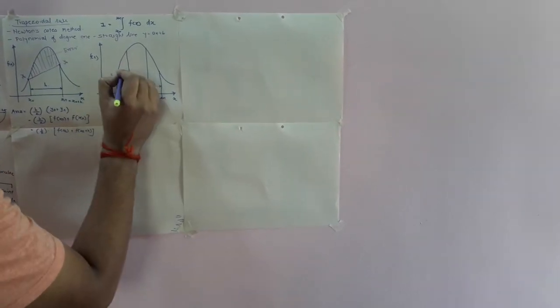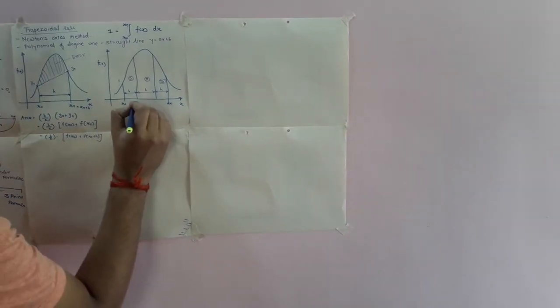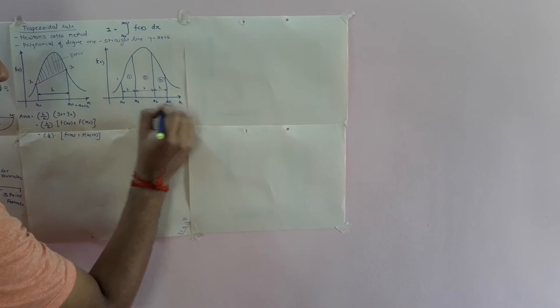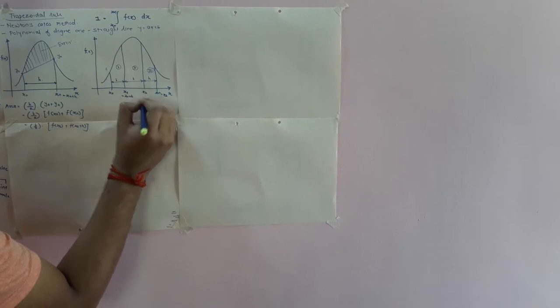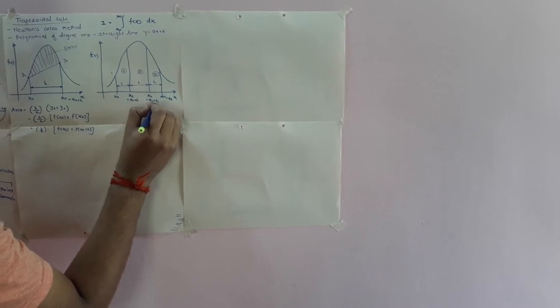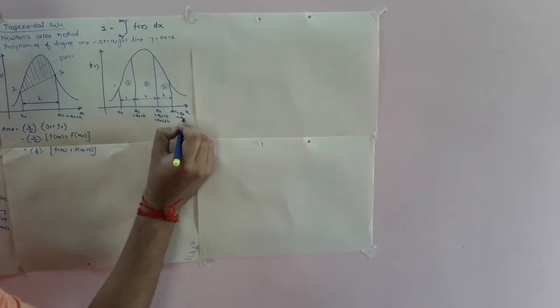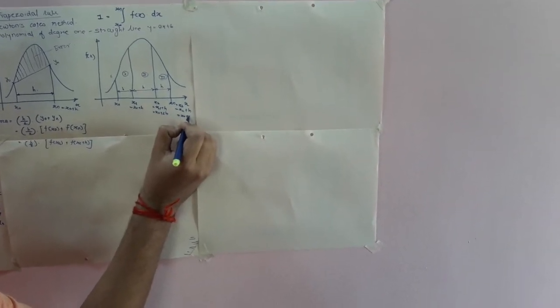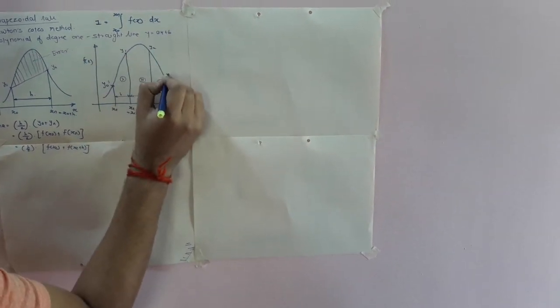The strip height is h everywhere, giving us a first area, second strip, and third strip. Each strip has different points: x1 = x0 + h, x2 = x1 + h = x0 + 2h, and x3 = xn = x2 + h = x0 + 3h. Correspondingly, we find the y-values: y0, y1, y2, and y3.